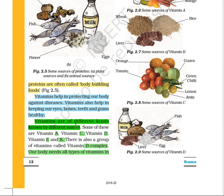Vitamins help in protecting our body against diseases. You have studied carbohydrates, fat, and protein — they are all nutritious. But vitamins and minerals are not nutritious at all; however, they are required for the proper functioning of our body. Thus, they are called protective food.